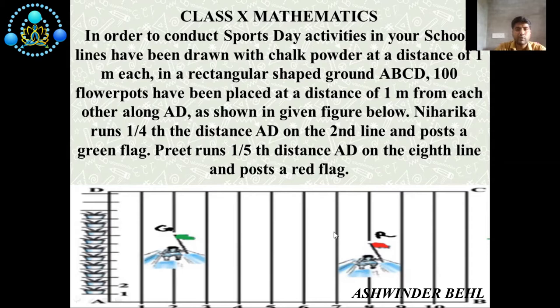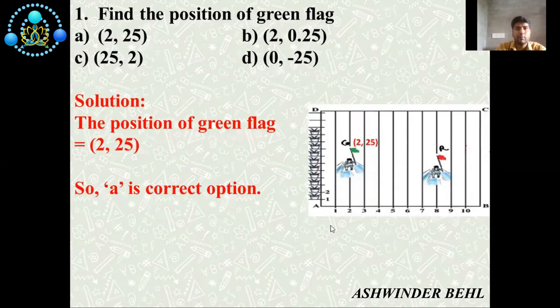First question: find the position of the green flag. There are four options: (2, 25), (2, 0.25), (25, 2), (0, -25). If you see this picture, the x-axis is 2. According to our question, one fourth of 100 gives us 25. So Niharika is at one fourth, meaning Y is 25. The position of the green flag is (2, 25). So the correct answer is A.